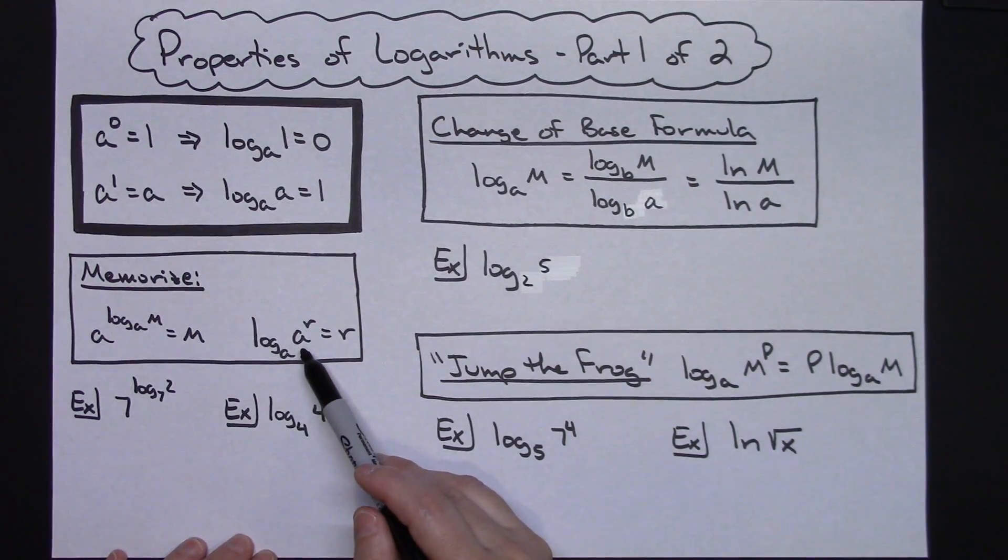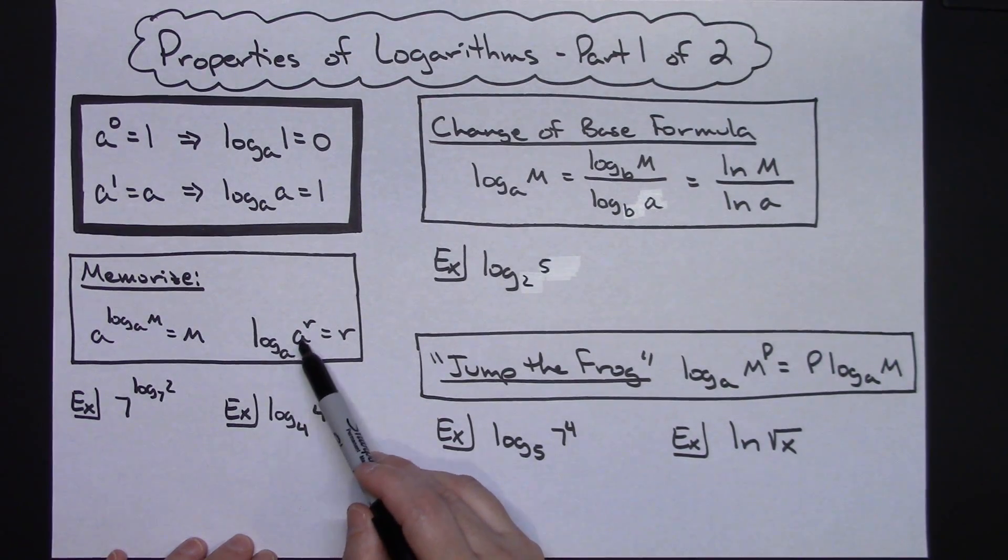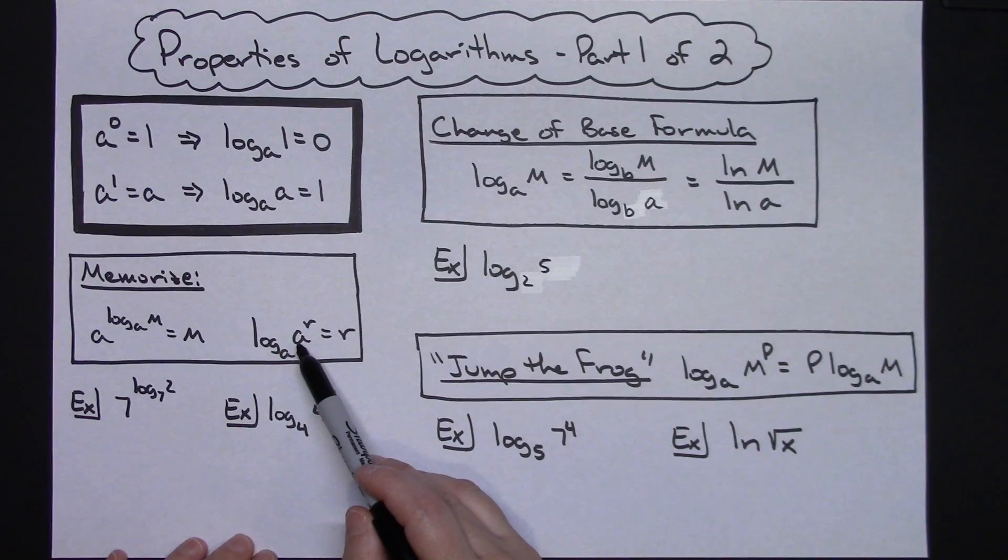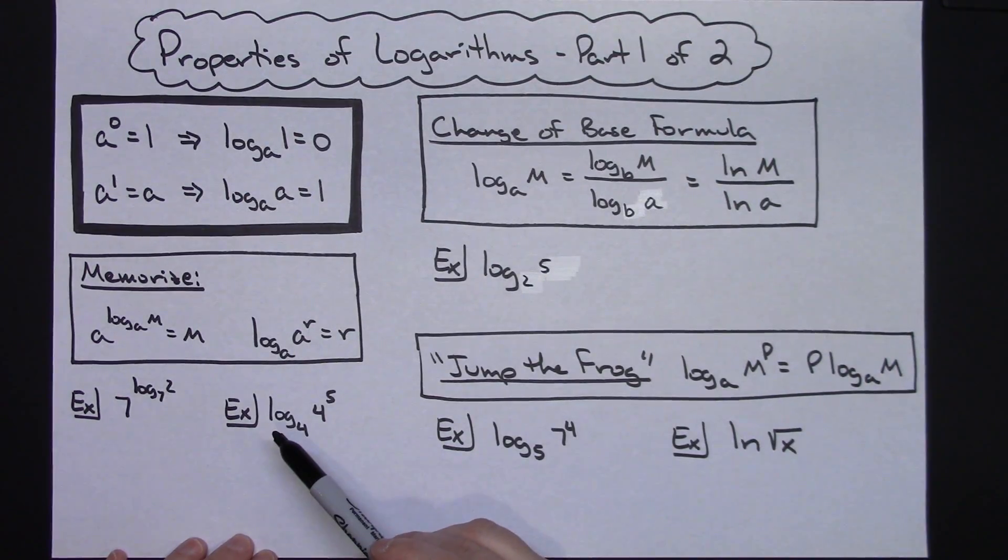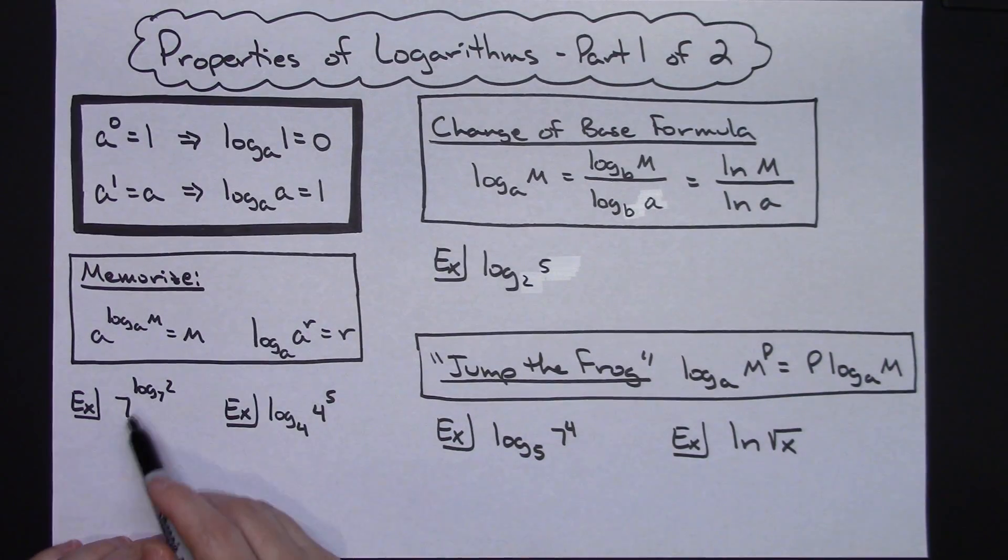And I can also rewrite that this way: the log of a raised to the r with a base of a. So again, the two bases match. The base on the exponent matches and the base on the log matches. And when that's the case, then the answer is just r. So if you know those real quickly, it will help you to evaluate some.